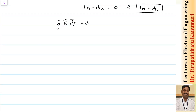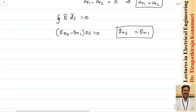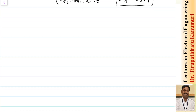As delta h tends to 0, the side contributions are neglected and only the top and bottom are counted. This gives Bn2 minus Bn1 multiplied by delta s equals 0, so Bn2 equals Bn1. The normal component of B is continuous across the boundary.